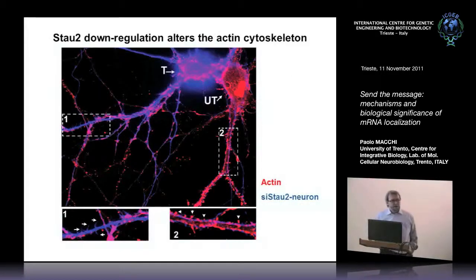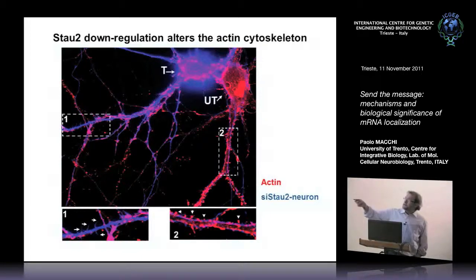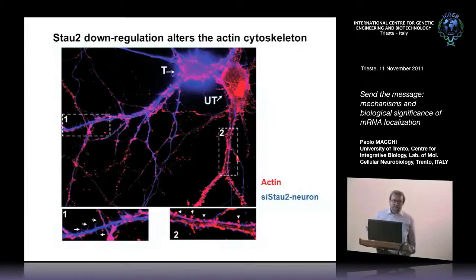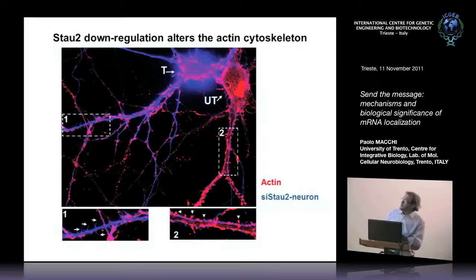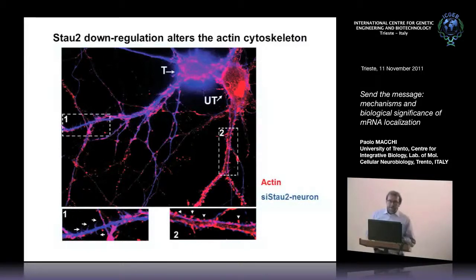To understand this phenotype, we examined the cytoskeleton. In control neurons, phalloidin staining for actin shows a homogeneous distribution with highly actin-stained synapses. In Staufen 2 knockdown neurons, there are very few patches of actin, areas with no actin at all, and pseudofilopodia that are basically empty of actin. So somehow the down-regulation of Staufen 2 leads to a reduction of actin.